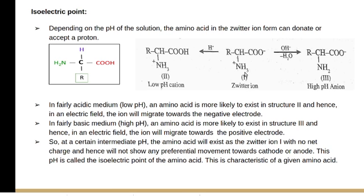A zwitterion is a dipolar ion — it has both negative charge and positive charge. Depending on the pH of the solution, the amino acid in the zwitterion form can donate or accept a proton. So depending upon the pH of the solution, an amino acid zwitterion can either accept a proton or donate a proton.